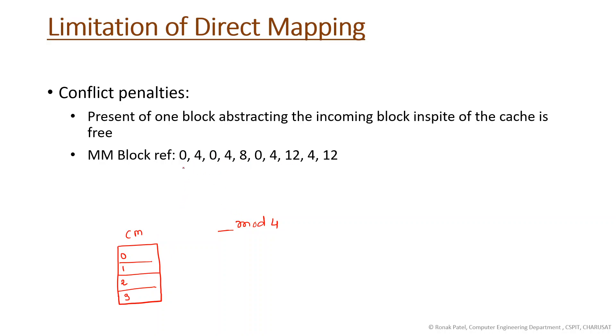First, main memory block 0 (0 modulo 4 = 0) will be placed in cache block 0. Then if we need to place block 4 into cache memory, block 4 must go to cache block 0, so we need to replace the existing block 0 with block 4.